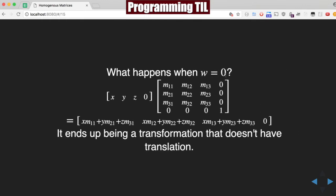What happens when the W is 0, so in the vector x, y, z, 0? You can see we have the same formula from before, and it ends up being a transformation that doesn't have a translation. Very simple.